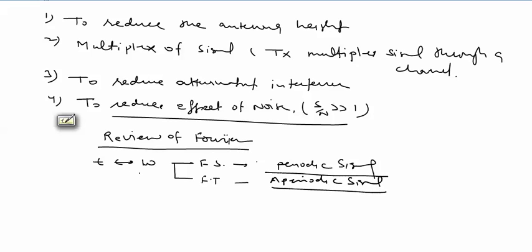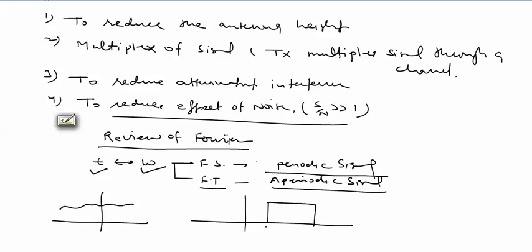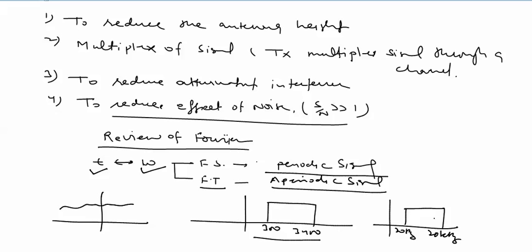Fourier series is used for periodic signals; Fourier transform is used for aperiodic signals. Both convert waveforms into spectra. For voice, the spectrum range is 300 to 3400 Hz. For audio, we can draw 20 Hz to 20 kilohertz — with the audible range approximately 5 kilohertz to 15 kilohertz. Fourier transform is very useful to calculate the bandwidth.